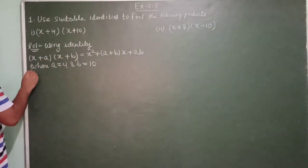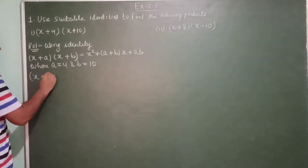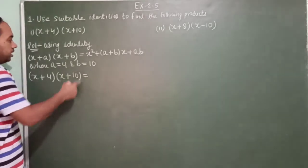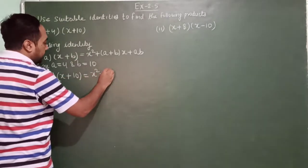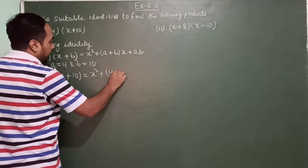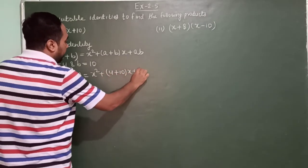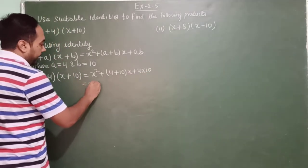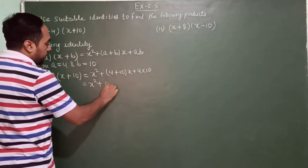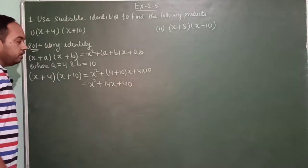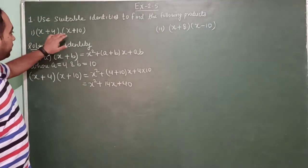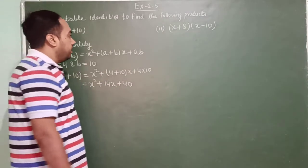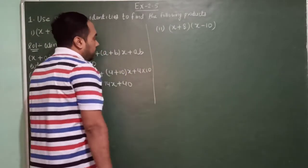Using the identity with a equal to 4 and b equal to 10: this is equal to x squared plus (a plus b) into x plus a times b. So x squared plus (4 plus 10) x plus 4 times 10, which gives x squared plus 14x plus 40. This is the product of (x + 4) into (x + 10).